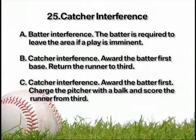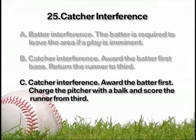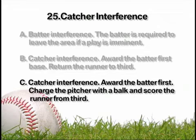The correct ruling is C. Catcher interference — reward the batter first, charge the pitcher with a balk, and score the runner from third.